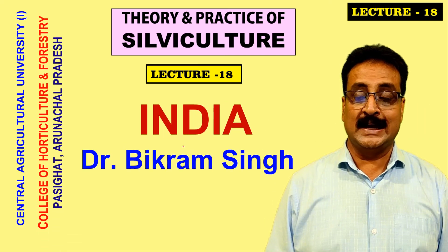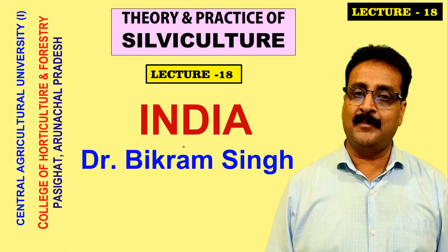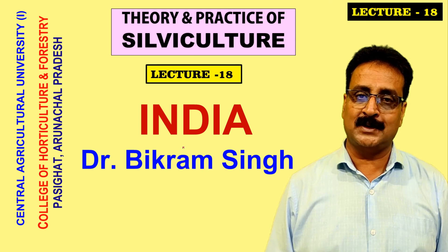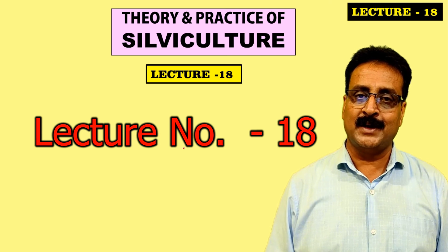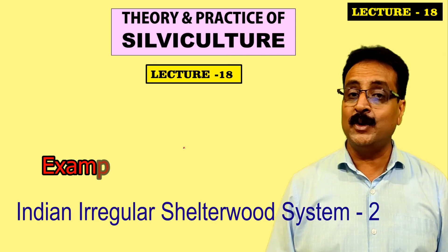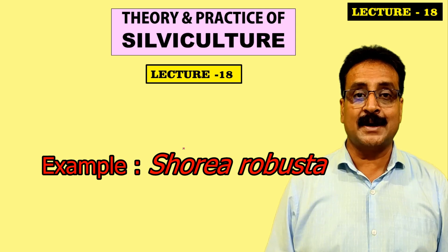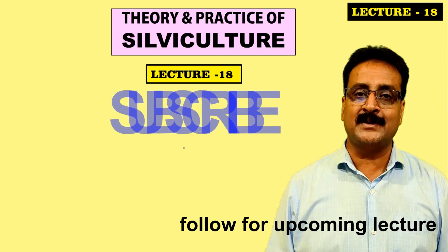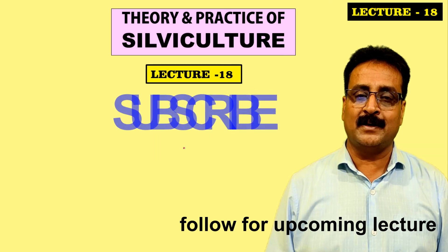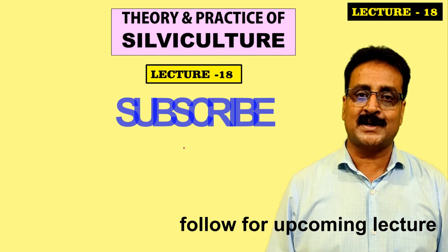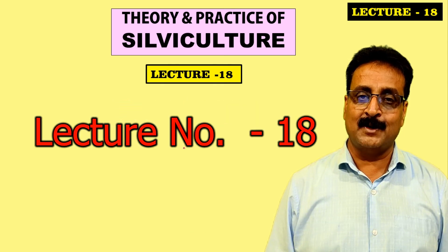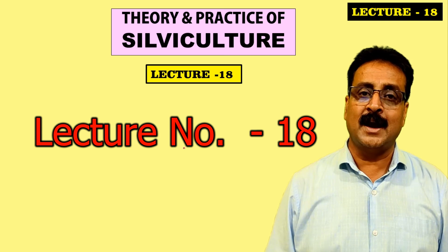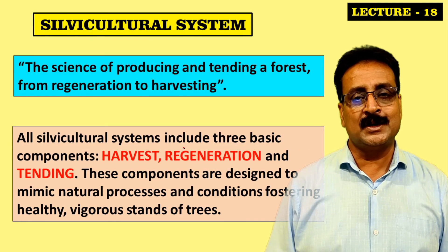Theory and Practice of Silviculture, Lecture 18. In the previous lecture we studied about the regular shelterwood system and the Indian irregular shelterwood system. Now in this lecture we are again going to study the Indian irregular shelterwood system with an example of regeneration of Shorea robusta. This is a very big challenge and an important topic - how Shorea robusta could come under the Indian irregular shelterwood system, as it is one of the most economical and important timber species.